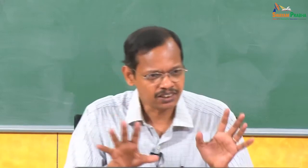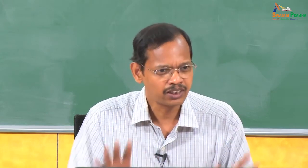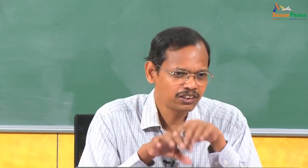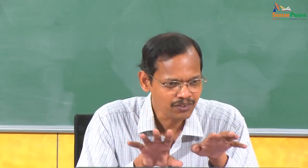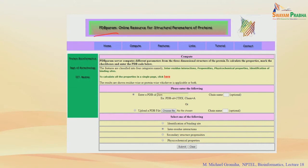We discussed various types of interactions and parameters that can be derived from protein 3D structures. Computing all these parameters computationally requires time, so there is a program called PDBparam — an online resource for the structural parameters of proteins. It uses PDB structures and derives various parameters, which is why they use the term 'param.' PDBparam provides numerical values for several parameters obtainable from protein 3D structures, with 4 different types of values and aspects available.